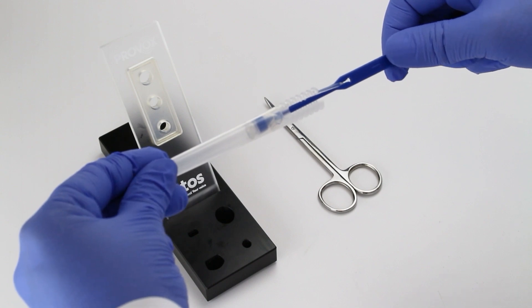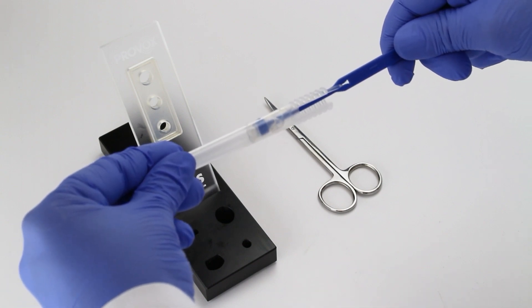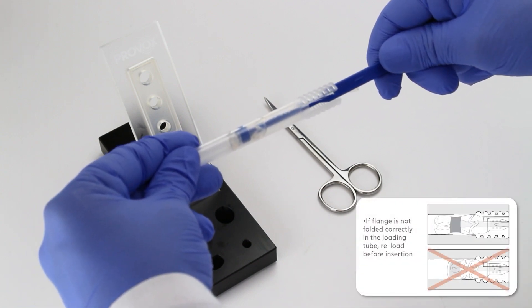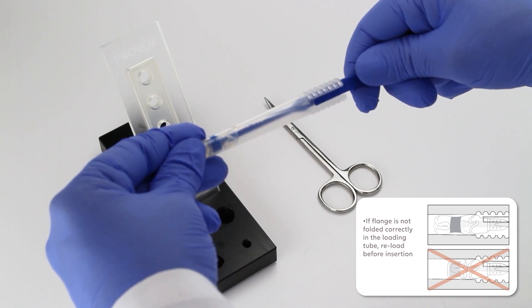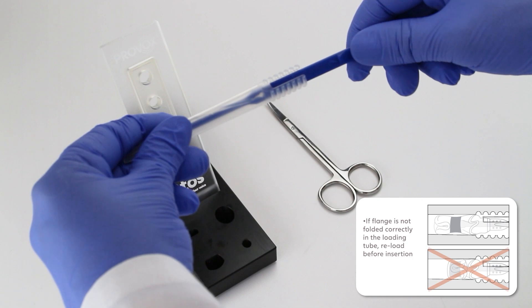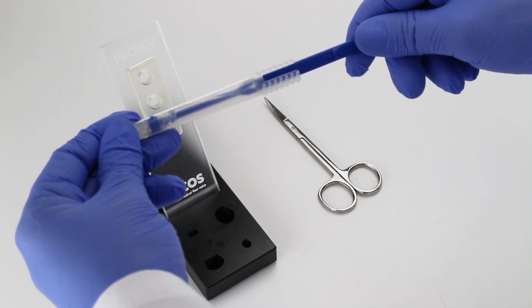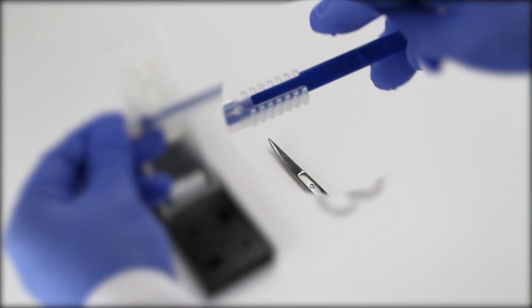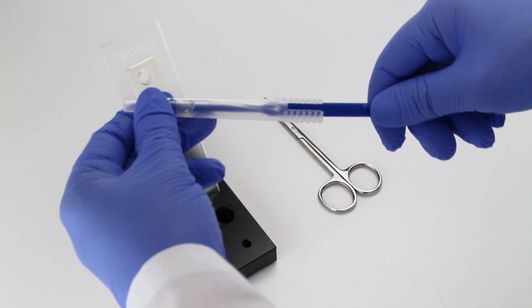Advance the prosthesis with the inserter pin until the active valve reaches the base of the tapered tip at the end of the clear loading tube. The line marked 1 on the inserter pin should now align with the bottom edge of the clear loading tube.